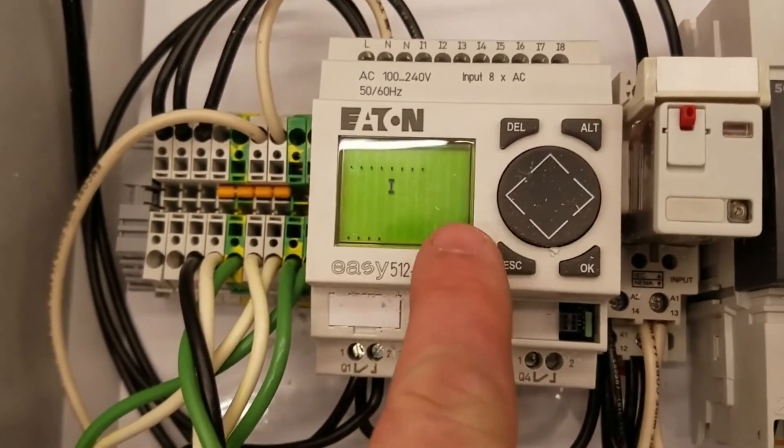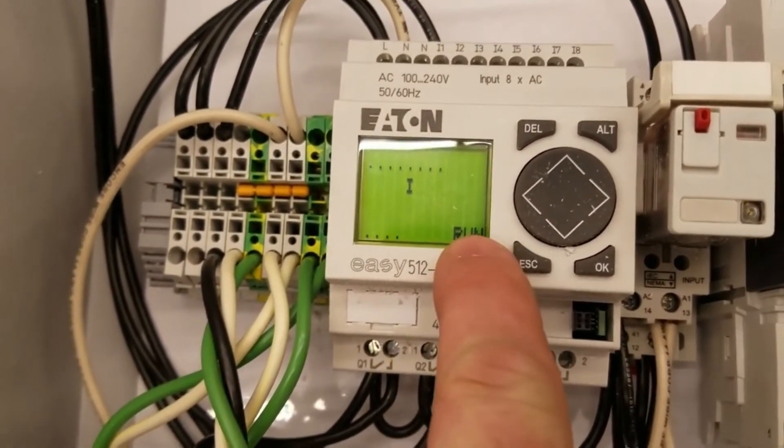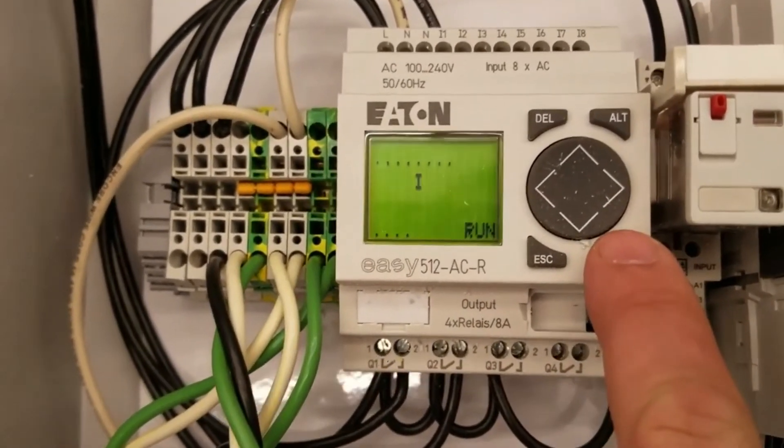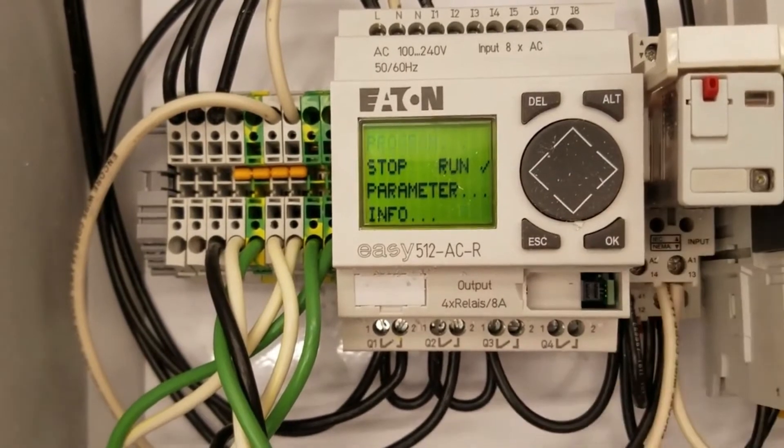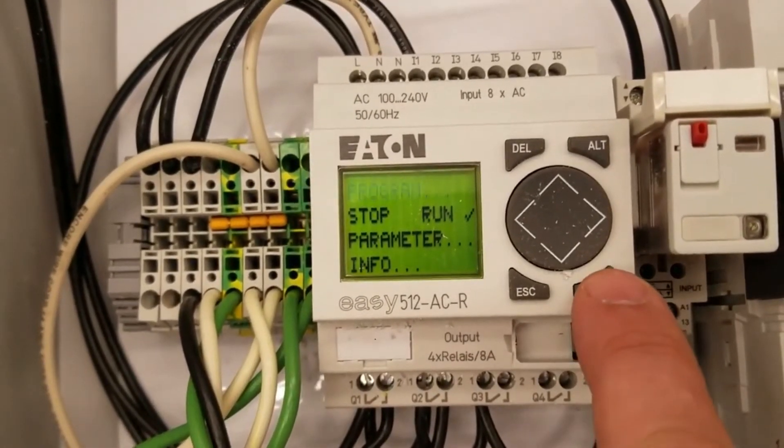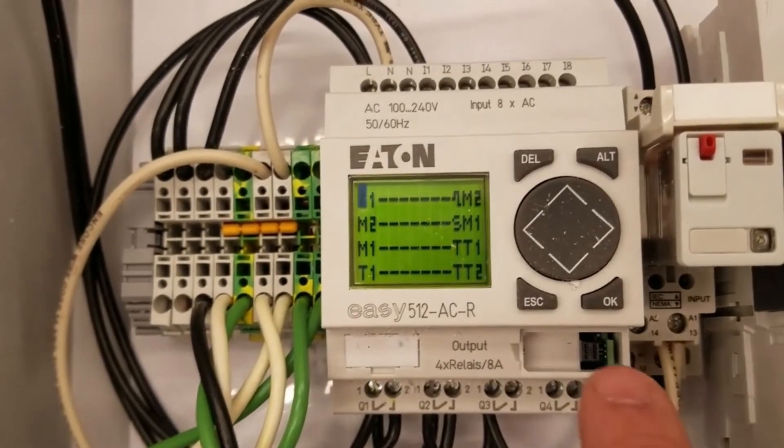All right, on the PLC itself, you want to make sure it says run. That's the biggest thing. And then to program the timers, hit the OK button and you'll see it comes up at program. Hit OK and you'll see the PLC program.